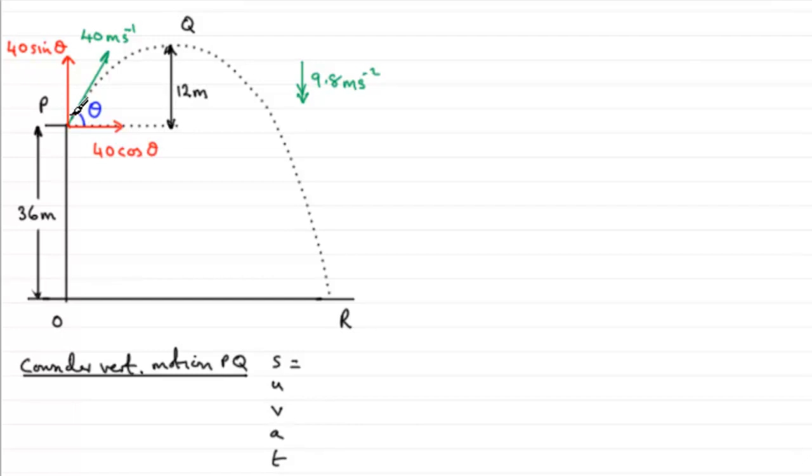So s, the displacement going from P to Q, will be 12 meters. As for u, the initial velocity, well again it's upwards, it's in the positive sense, so it'll be 40 sine theta.